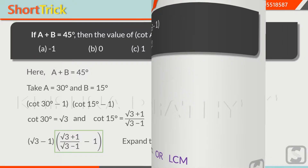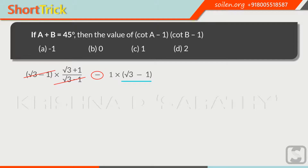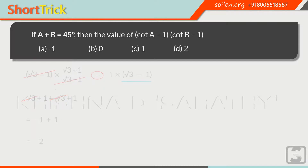First, we will expand the brackets. We can write the square root of 3 minus 1, times the square root of 3 plus 1 over the square root of 3 minus 1, minus 1 times the square root of 3 minus 1. The square root of 3 minus 1 is cancelled out. This negative sign will change the signs of both terms inside the bracket, and we are left with the square root of 3 plus 1 minus the square root of 3 plus 1. Two equal terms with opposite signs become zero. Finally, we have 1 plus 1 equals 2.